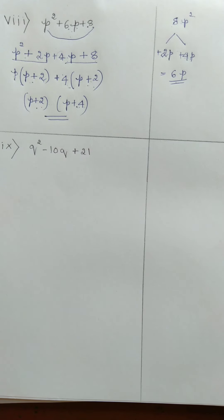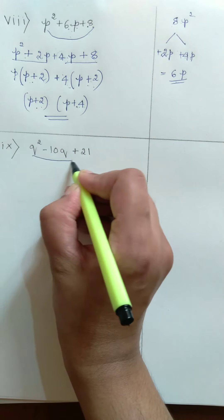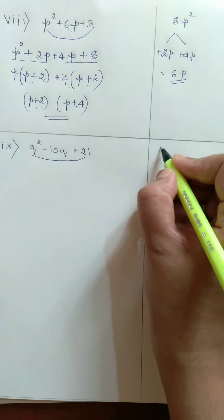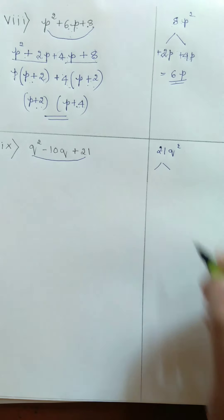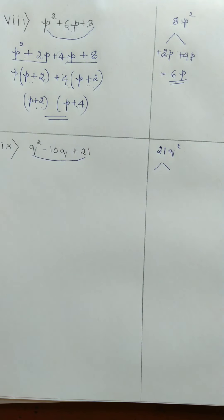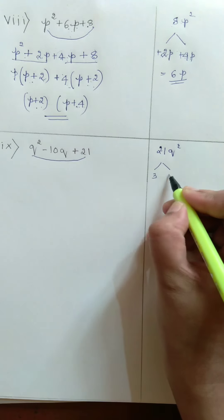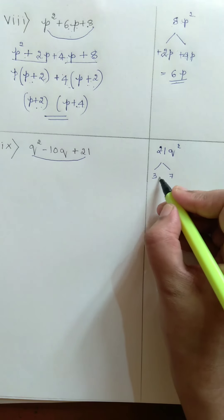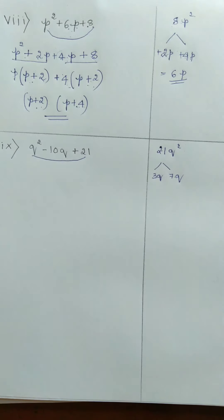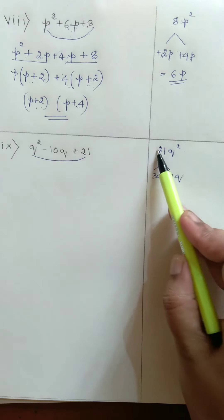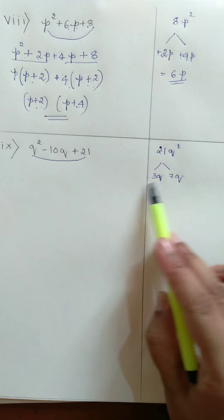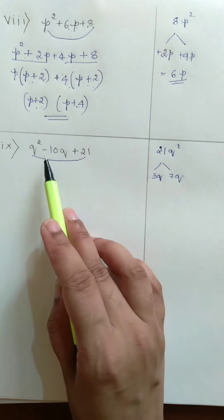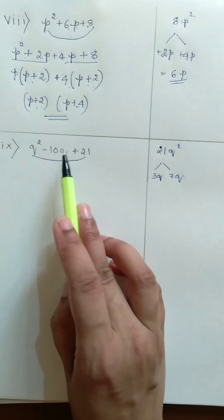We have another problem: Q squared minus 10Q plus 21. Taking the first and third terms gives 21Q squared. Let us find the factors of 21. We know 3 sevens are 21. Putting Q into both factors gives 3Q and 7Q. We have to apply signs to these factors such that we get the middle term minus 10Q.